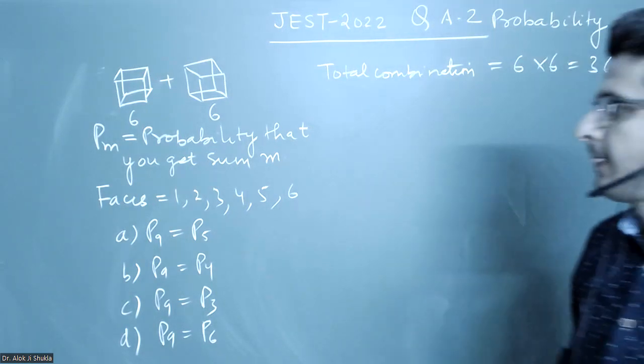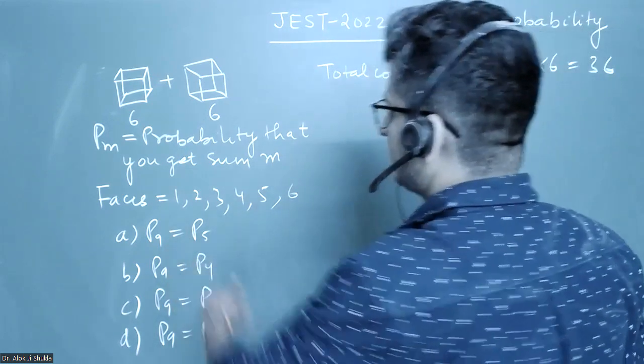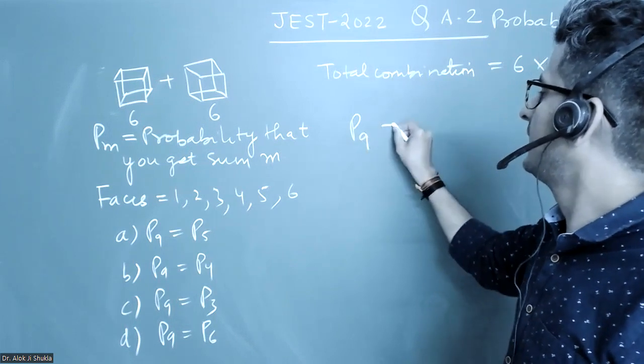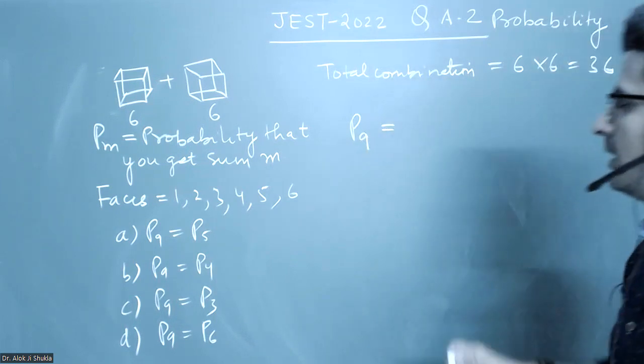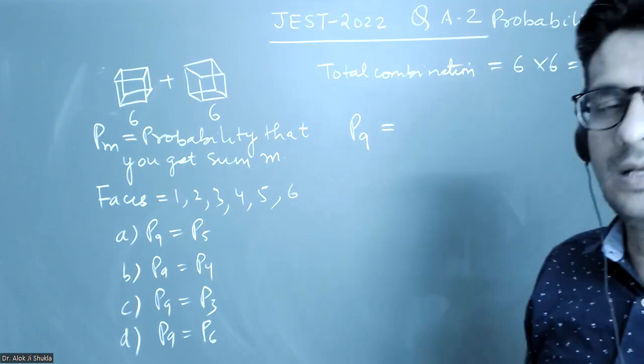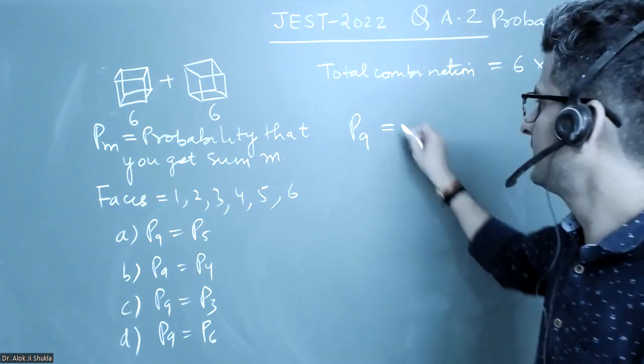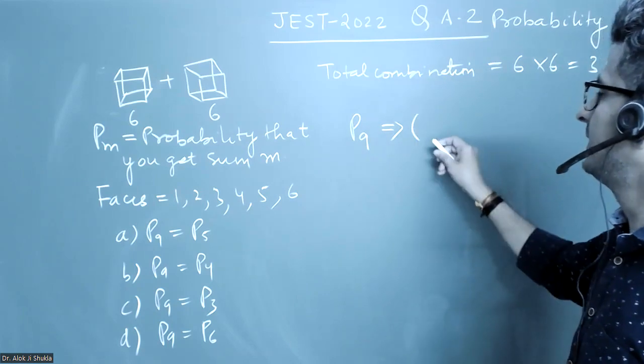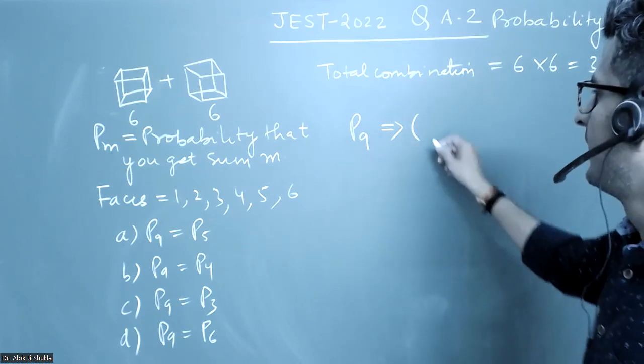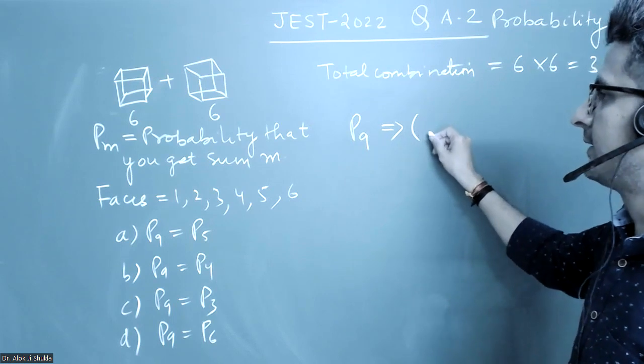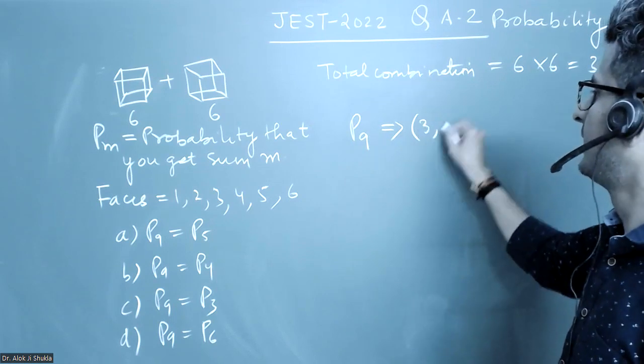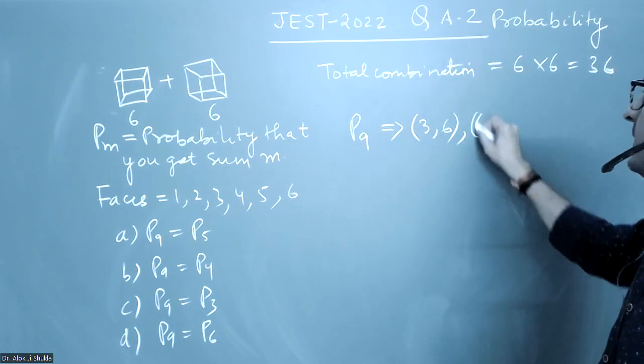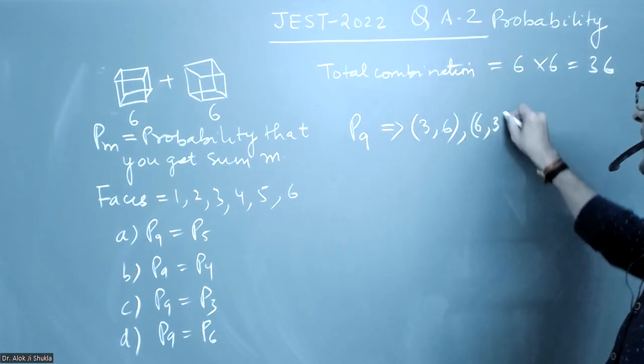Let me check the first one. What is the probability that we get 9? We'll have to see in how many ways we can get 9. So first, if I get 3 in the first die and 6 in the second, we get 9. Then 6 in the first and 3 in the second also gives a sum of 9.